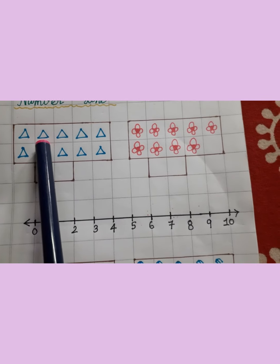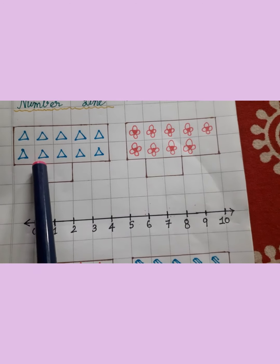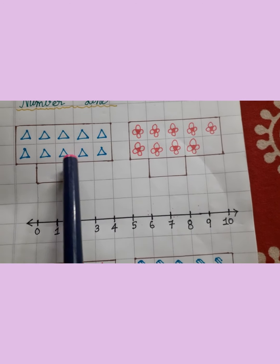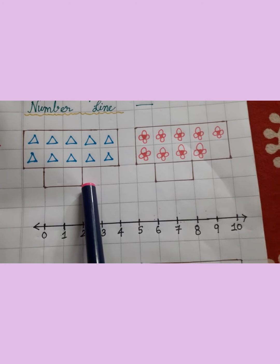One, two, three, four, five, six, seven, eight, nine, ten. So here we have ten triangles.